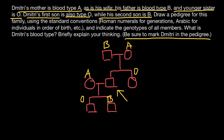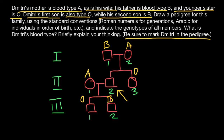We specify generations with Roman numerals. This is generation one, this is generation two to which Dmitri belongs, and this is generation three — the generation of Dmitri's children. We also specify each person in each generation with Arabic numerals: person one, person two in generation two, and person one, person two in generation three.